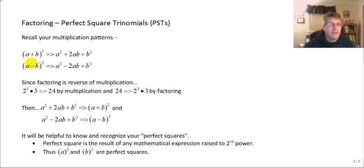We can't just square each term. We need that middle or linear term — that 2 times a times b.